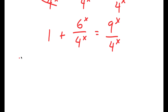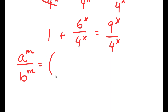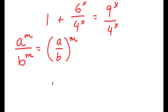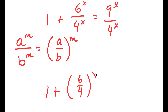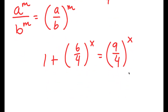If I have something in the form a to the power of m over b to the power of m, this is equal to a over b to the power of m. So in this case, 6^x over 4^x is going to equal 6 over 4 to the power of x, and 9^x over 4^x is going to equal 9 over 4 to the power of x.